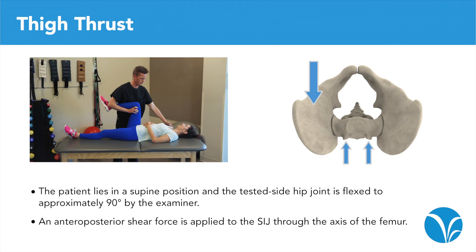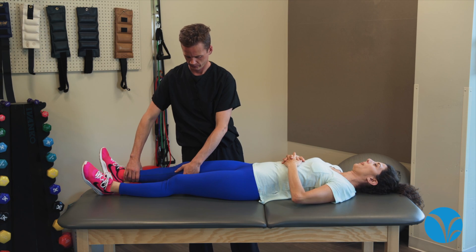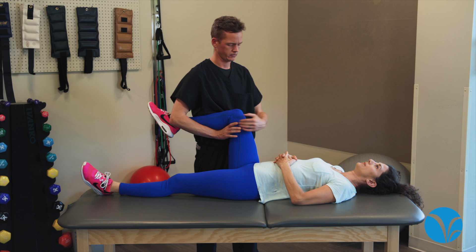When performing the thigh thrust test, the patient lies in a supine position and the tested side hip joint is flexed to approximately 90 degrees by the examiner. An anteroposterior shear force is applied to the SI joint through the axis of the femur. Resulting pain indicates the test is positive.